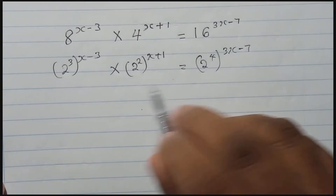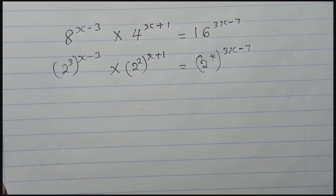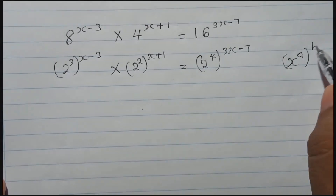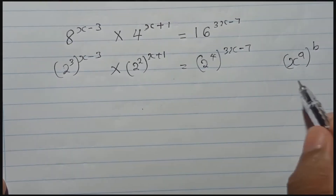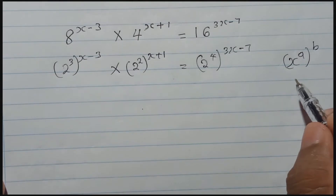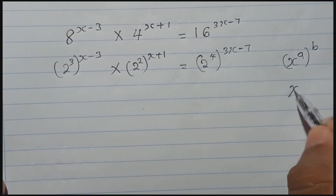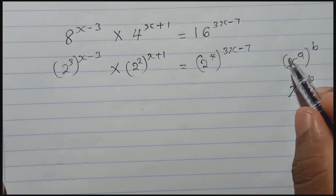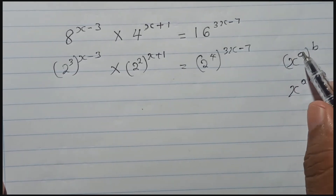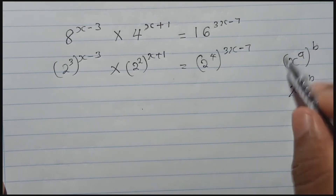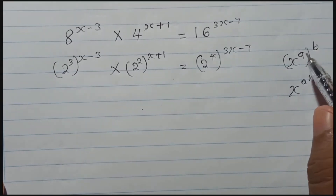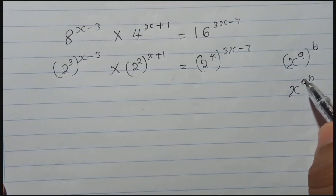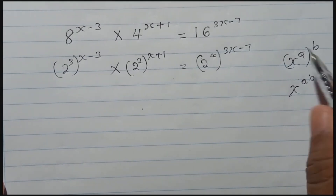Now you need to remember this indices rule: if you have x to the power a, and again to the power b, what we can write is x to the power a times b — we can multiply the indices. When you have one base with an index, and again another index for the whole thing, you multiply the two indices. So it becomes a×b. This is one rule to learn.